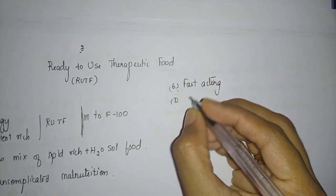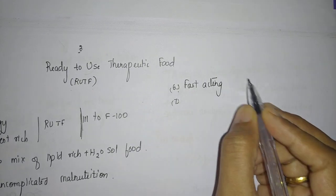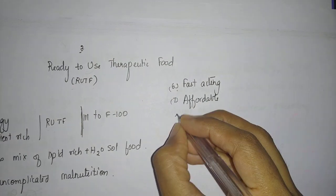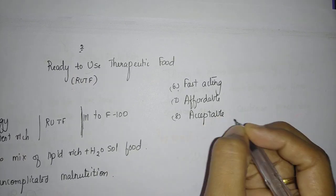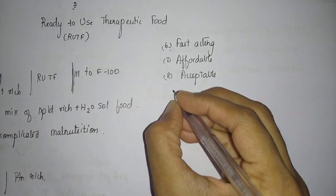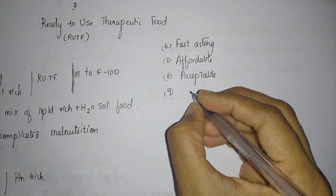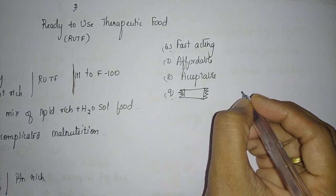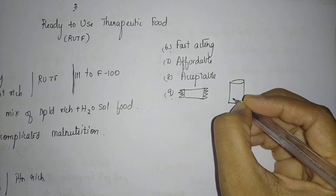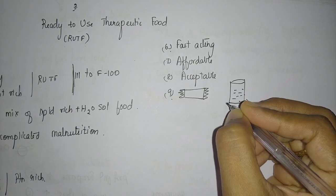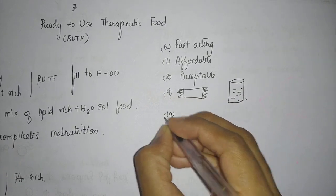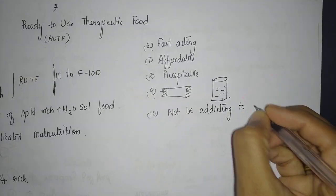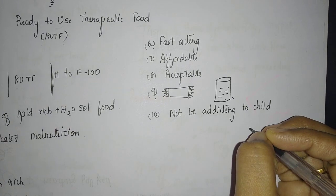Once the first dose is over, she has to buy more, so it should be at an affordable rate for the family. It should be acceptable in their family by community or religion. Ideally, it should be available in single-serve packets so they can buy as many as needed instead of a big container. Last but not least, it should not be addicting to the child. These are the expected characteristics.